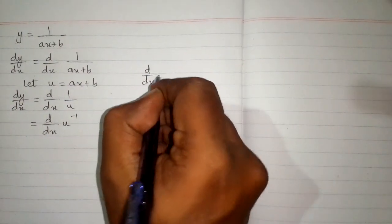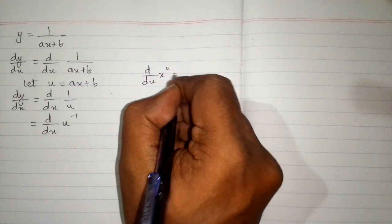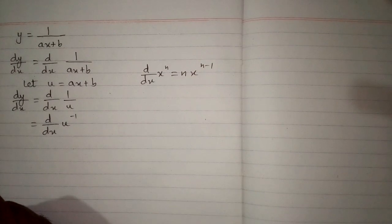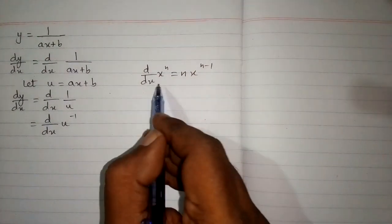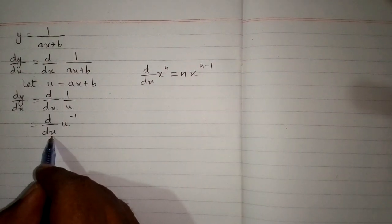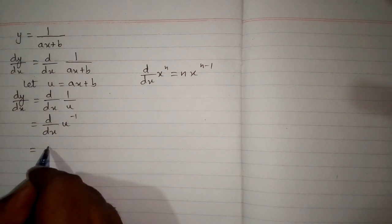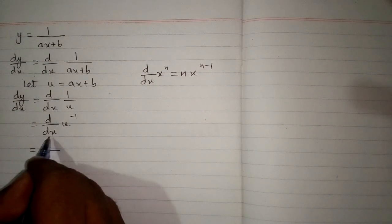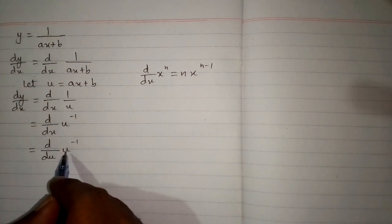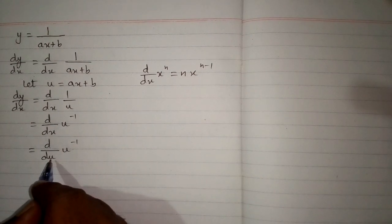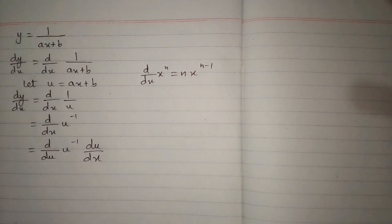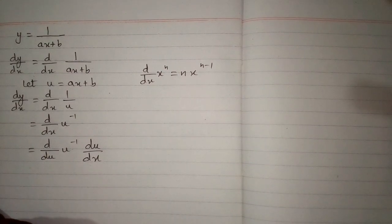Now we can apply the power rule of differentiation, which is d/dx of x to the power n equals n times x to the power n minus 1. Both variables must be the same, so we replace dx by du to differentiate u raised to the power minus 1, and multiply by du/dx. This is called the chain rule of differentiation.